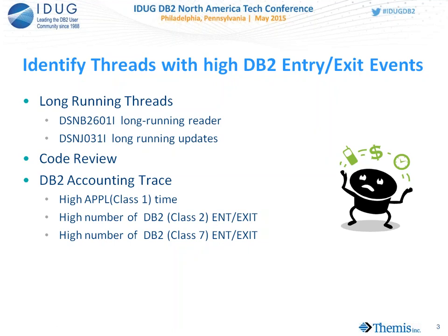That's IFKID 232. Or at the package level, if you're gathering the class 7 trace information for your accounting trace, that will give you the package-level entry-exit events. Both of those — your entry-exit is acquired through your accounting class IFKID 232. These high entry-exits allow you to reduce the overall elapsed time and the time in the application. Those with high entry-exits are candidates for using things like row-set processing and reviewing how the actual SQL is coded.